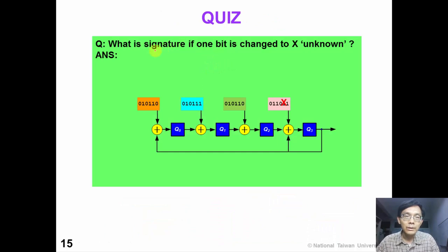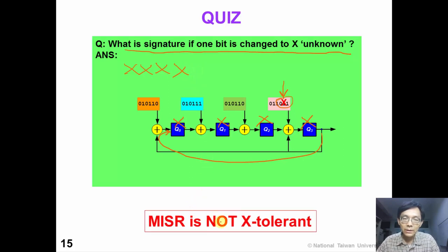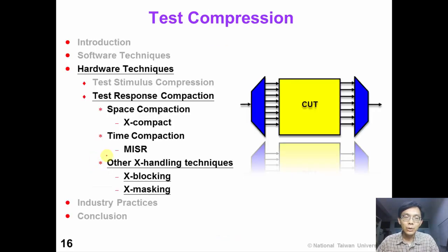MISR has only one problem. Suppose one bit is unknown — what is the signature after six cycles? After two cycles, Q3 will become X, and this will propagate to Q0. After three cycles Q0 will be unknown, then Q1, then Q2. So very quickly after one single unknown enters the MISR, the whole signature will be contaminated. MISR has a big problem: it is not X-tolerant. So if we want to use MISR we will need some techniques to handle the unknown.